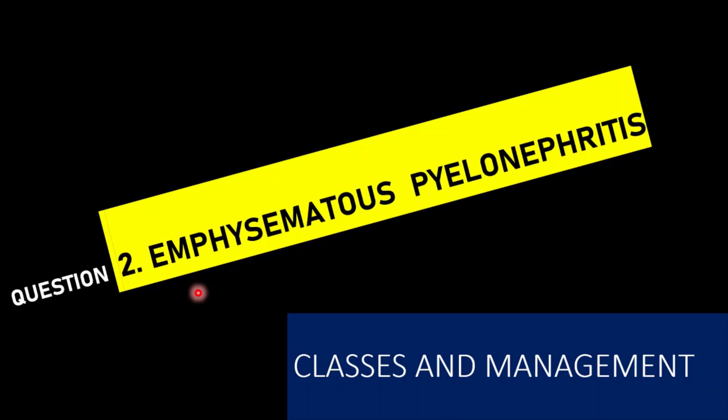Good evening. Last week there was a case in the medicine ward where the patient was a case of diabetes with emphysematous pyelonephritis. He was responding to antibiotics, but subsequently the patient's sepsis deteriorated and the renal function also deteriorated. There was a doubt among the residents about how to manage emphysematous pyelonephritis and when to decide the patient needs intervention. For that, I came up with this video to show the classes.